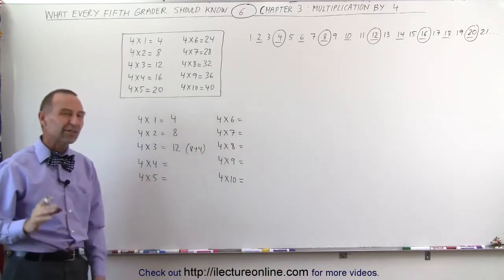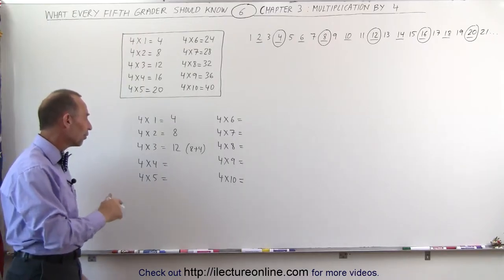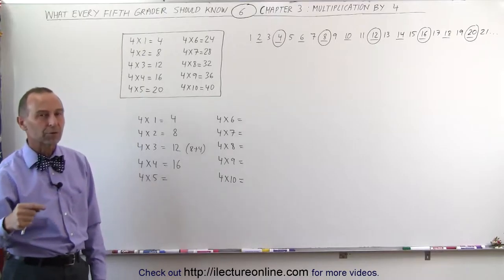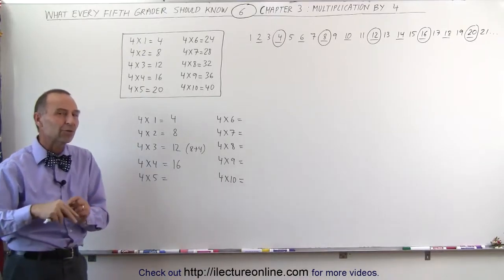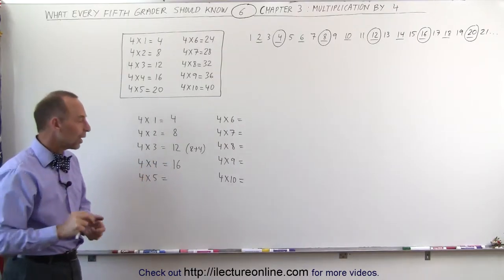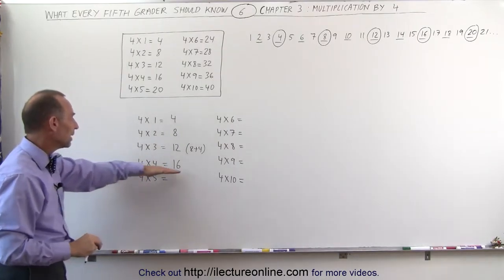4 times 4 is kind of interesting, that's something we should just flat out memorize. 4 times 4 is equal to 16. 4 plus 4 plus 4 plus 4, you get 16. And later on, when we start doing exponents, you'll understand why 4 times 4 should be easy to memorize.